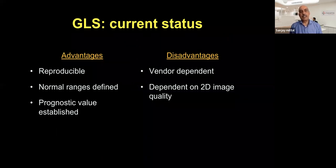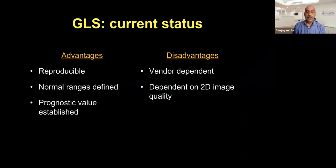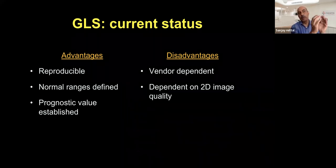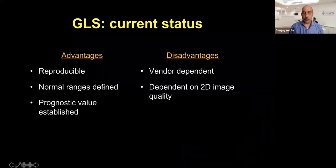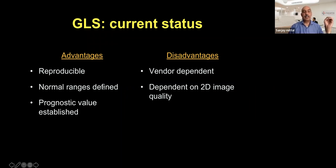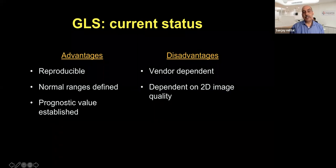That concludes the main presentation. The key advantages of global longitudinal strain: it is definitely reproducible, a good image is needed and the machine calculates offline, normal range is well-defined, and it has established prognostic value.